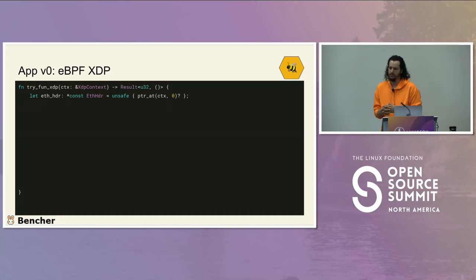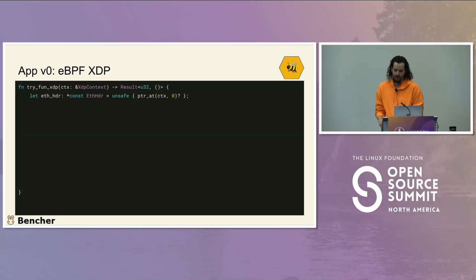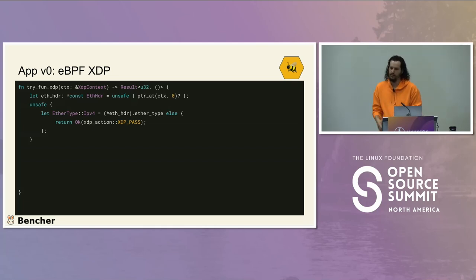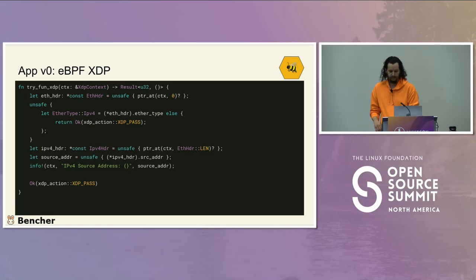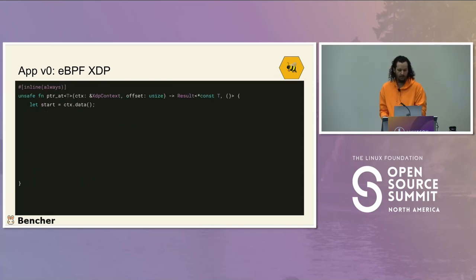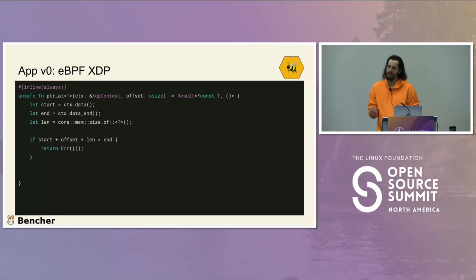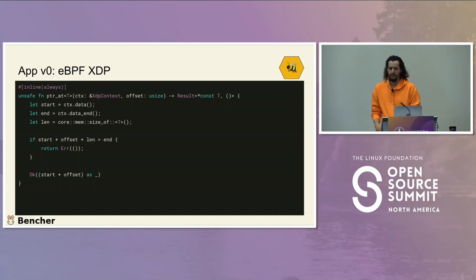In the tryFunXDP function, we get the Ethernet header from the context, doing bounds checking using a pointer helper. We only care about IPv4 right now, so anything else we just pass along. We extract the IP header, get the source address, and log it. Then we pass the packet. The pointer helper basically gets the start, end, and length and does a bounds check to make sure we're within memory — otherwise the verifier will get upset.